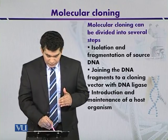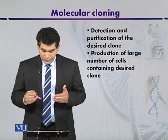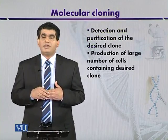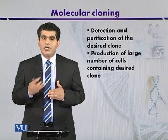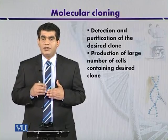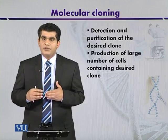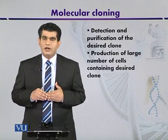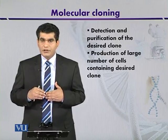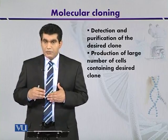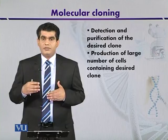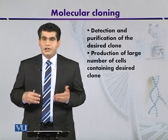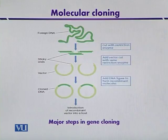The next step is detection and purification of the desired clone — selecting those transformants that contain our gene of interest from thousands of microbes in the gene library. We will discuss the selection method in the next diagram. Once selected, we can produce many copies of that clone to get our desirable end product.